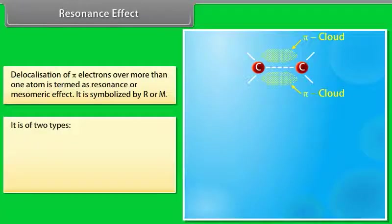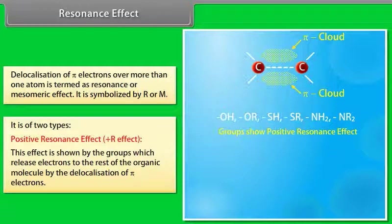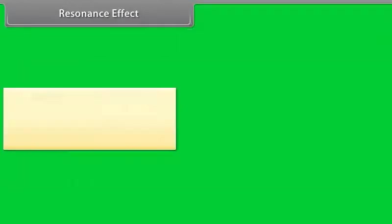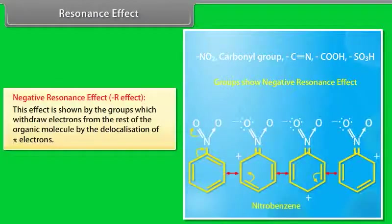The resonance effect is of two types. The positive R effect is shown by groups that release electrons to the rest of the organic molecule by delocalization of pi electrons — for example, aniline. The negative R effect is shown by groups that withdraw electrons from the rest of the organic molecule by delocalization of pi electrons — for example, nitrobenzene.